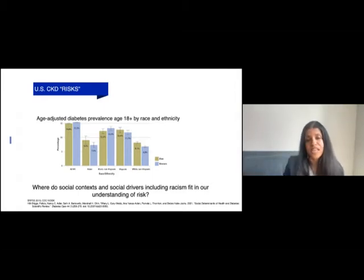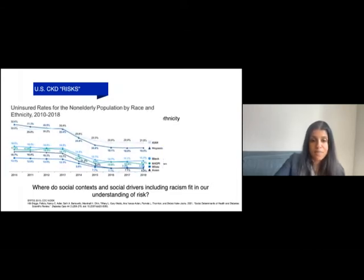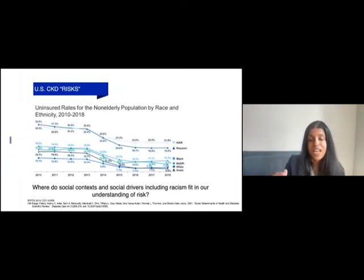When we look at rates of non-insurance for adults in the U.S. even after the Affordable Care Act, persistent disparities in access to care continue to serve as an underlying force driving some of those comorbid risk factors for chronic kidney disease.